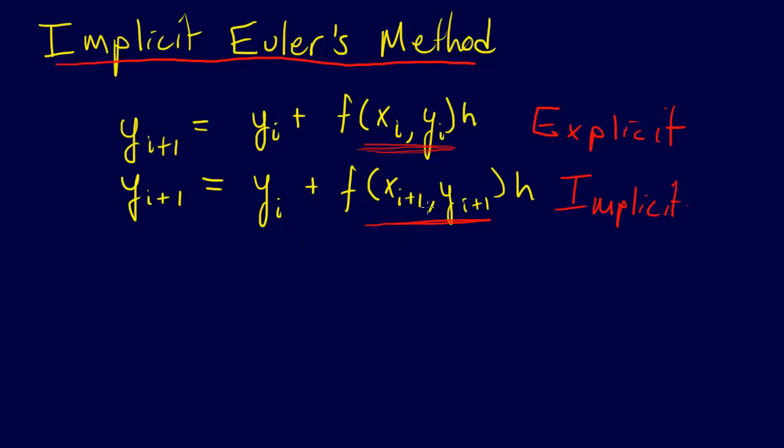It's the same exact idea. We're still just using one point and we're moving, but we see this yi plus 1 appears on this side of the equation and it also appears on this side of the equation. And this is why it's an implicit method.